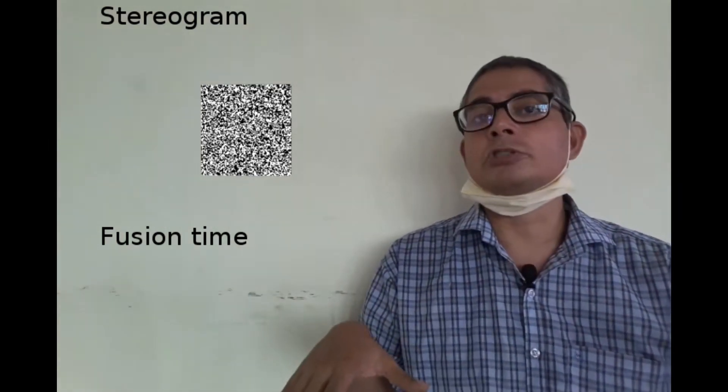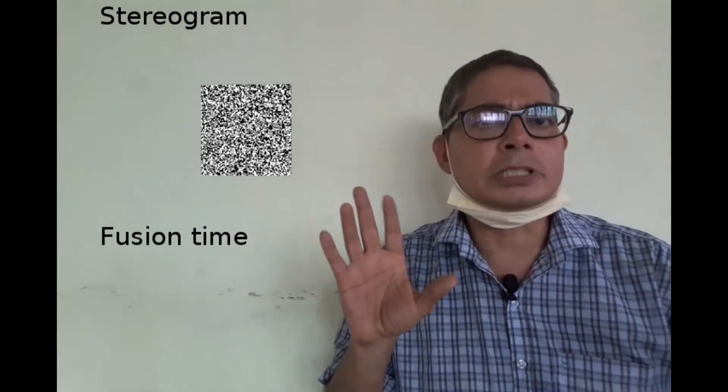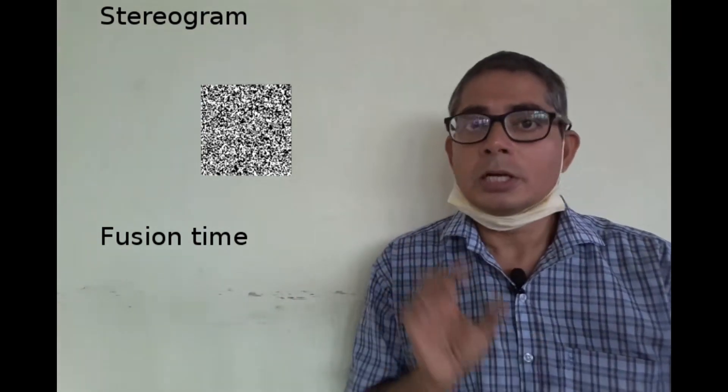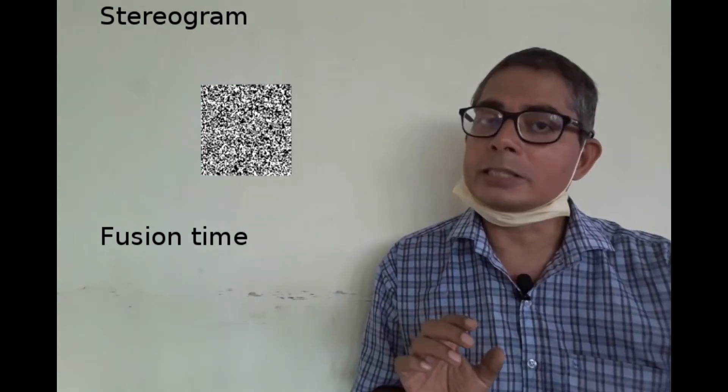Each person was to press a timer button the moment they started perceiving a 3D object. So we have two bunches of fusion times.